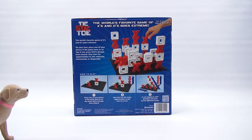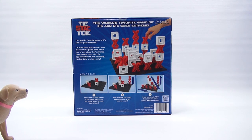Excellent. All right, here we go. Can we get back to the game at hand? The world's favorite game of X's and O's goes extreme. On your turn, place one of your pieces in the game base or on top of any piece that's already been played. Stay alert for opportunities to win vertically, horizontally, and diagonally.